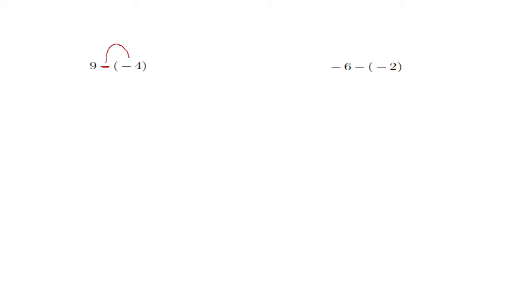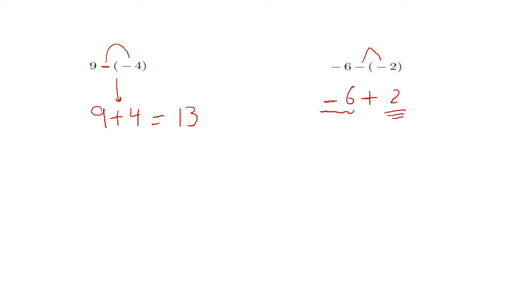Notice the following: if you have a sign outside a bracket and the two signs are the same, we change them into a positive. So we can rewrite the expression as 9 plus 4, and 9 plus 4 is 13. But if we have negative 6 plus negative 2, where this sign is negative and that sign is also negative — same signs become positive, so it's negative 6 plus 2. Since 6 is bigger, I put down the negative, and the difference between 6 and 2 is 4.